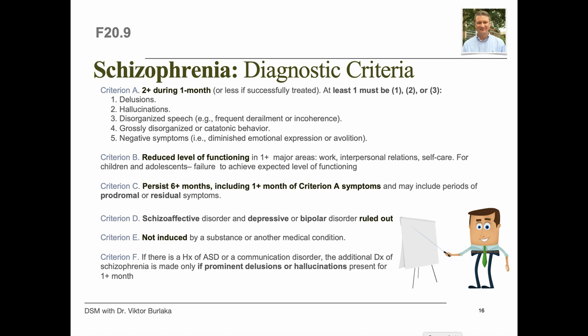Criterion D requires that schizoaffective disorder and depressive or bipolar disorder with psychotic features have been ruled out — either no major depressive or manic episodes occurred concurrently with active phase symptoms, or if mood episodes occurred during active phase symptoms, they were present for a minority of the total duration of the active and residual periods. Criterion E states the disturbance is not attributable to the physiological effects of drugs, medication, or another medical condition.